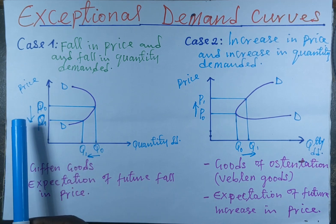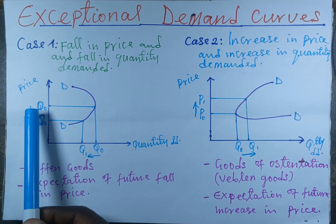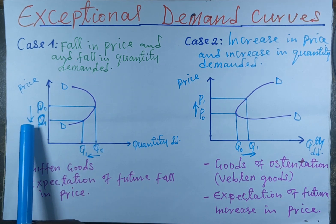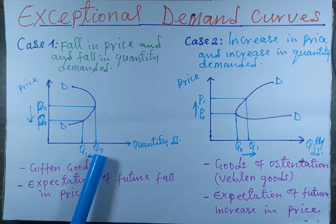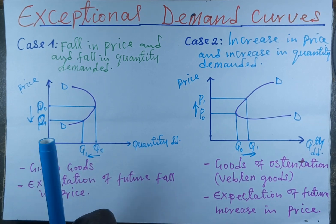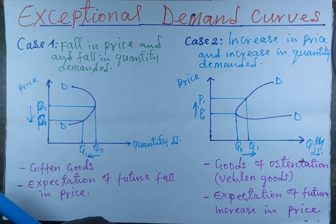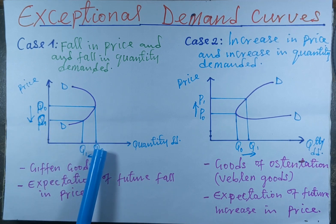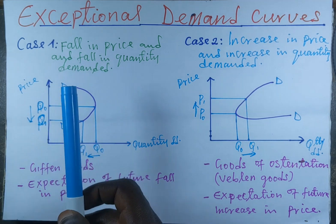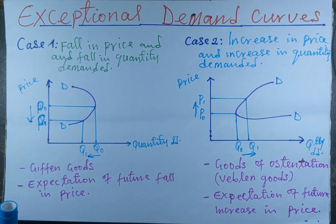So when price falls from P0 to P1, the quantity demanded also falls from Q0 to Q1. This is the case for Giffen goods, and they show an exceptional case with respect to the law of demand.